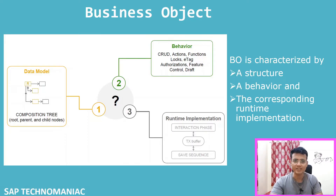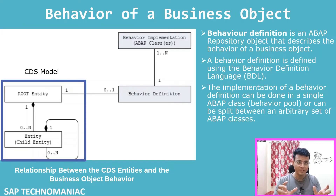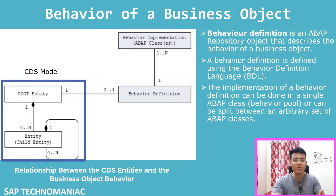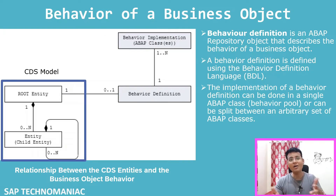In this video, we will discuss the remaining two parts of the business object: behavior and runtime implementation. The behavior is defined by a behavior definition. You may ask what a behavior definition is - it is an ABAP repository object, just like reports, classes, and function modules. We write code in the Behavior Definition Language, called BDL.